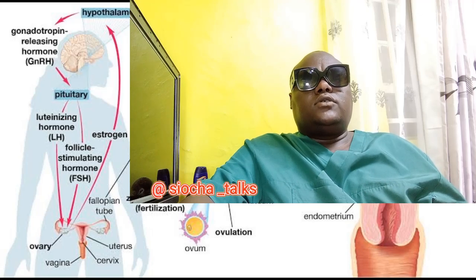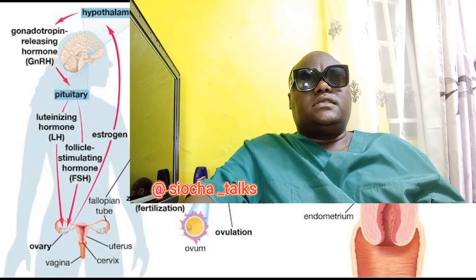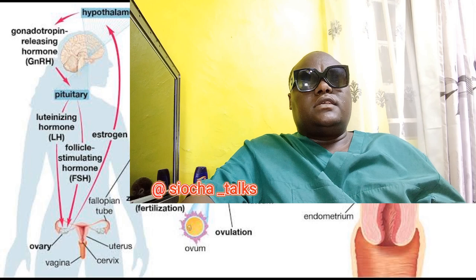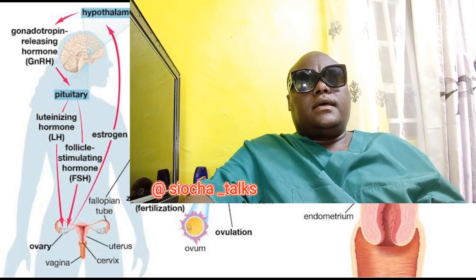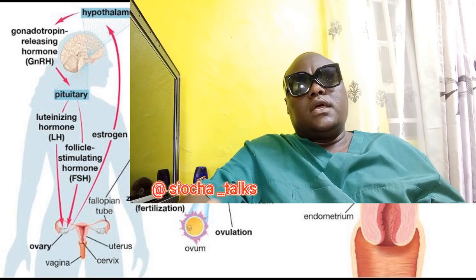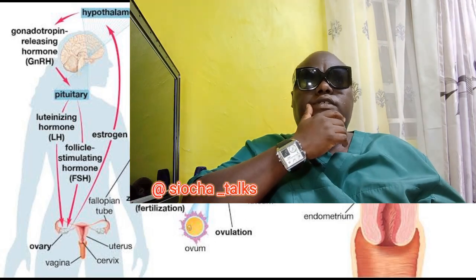Ovulation is a natural process that occurs in the female reproductive system. It is the release of a mature egg from the ovary into the fallopian tube, where it may be fertilized by sperm. Ovulation occurs once a month, approximately 14 days before the start of the next menstrual period.